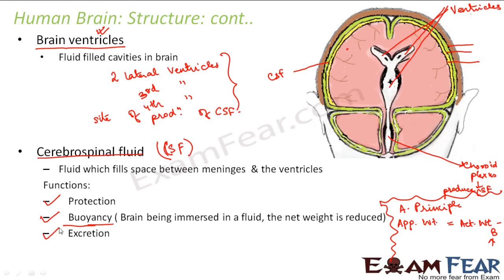The third function of CSF is excretion. The cerebrospinal fluid flows and eventually gets into the blood, and this flow is unidirectional — CSF enters the blood but blood doesn't come back into the CSF. Whatever waste materials are present in the brain, the cerebrospinal fluid takes them away and puts them into the blood. These are the important functions of cerebrospinal fluid.